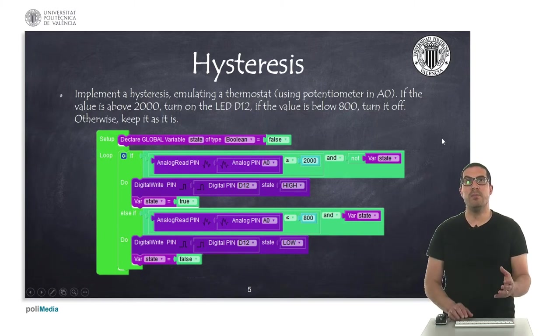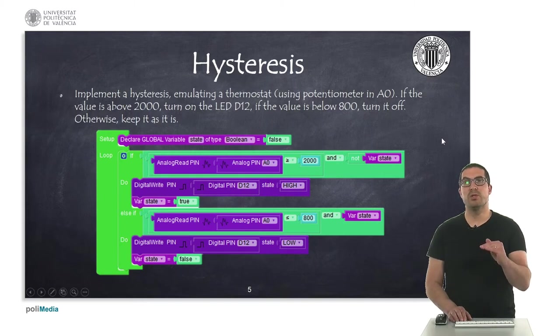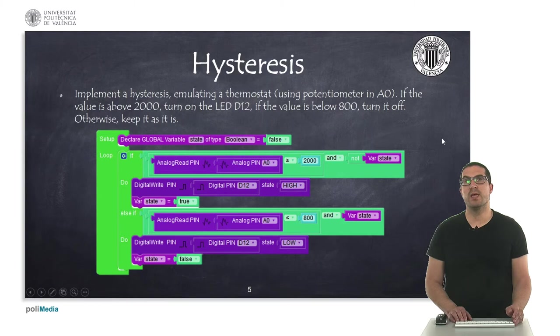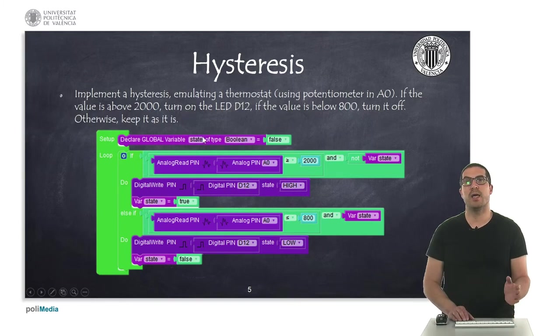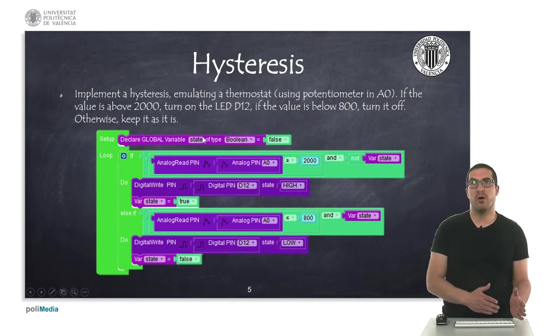But, if we don't implement this hysteresis effect, then the temperature could be varying between the reference that you're putting, and this is not good specifically if you're using a relay. So, that's why we use in most of our temperature control systems like a thermostat. And this is just simply declaring a state variable, which I need to know if I'm on one state or another.